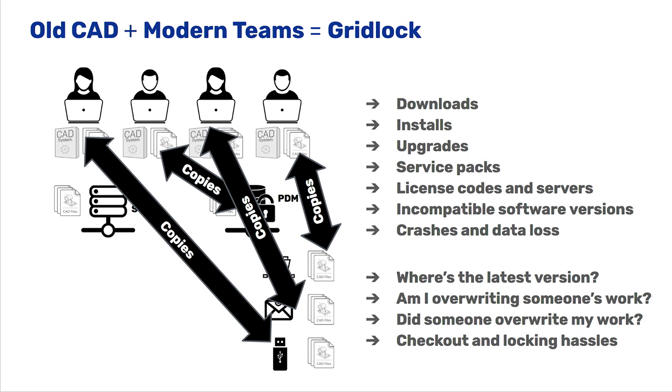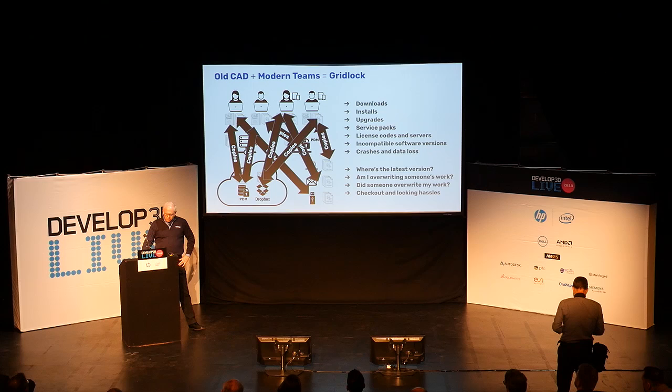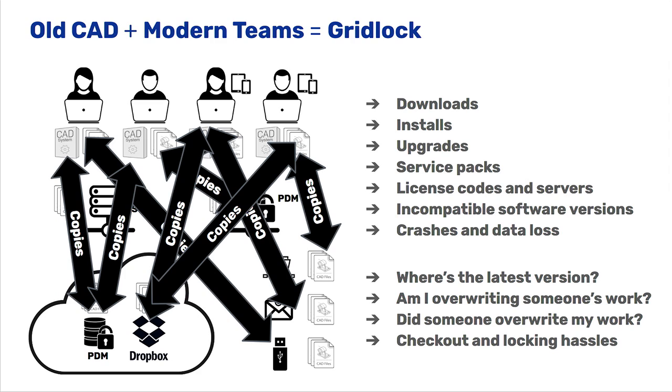This leads to problems: where's the latest version? Am I going to overwrite your changes? Are you going to overwrite mine? And worst of all, it stops people from working fast, because as soon as you have to check out and lock, no one else can work on it right now. We tried moving files and software installs to the cloud, but if you just copy files to and from the cloud, in our opinion, you don't really solve the problem — you just move them around. This diagram looks complicated, but it's actually a dramatic simplification compared to any real-world process.